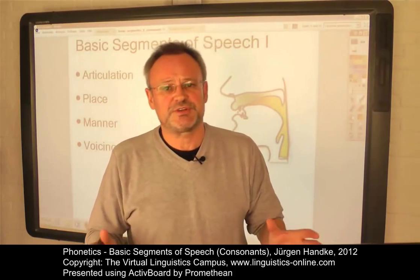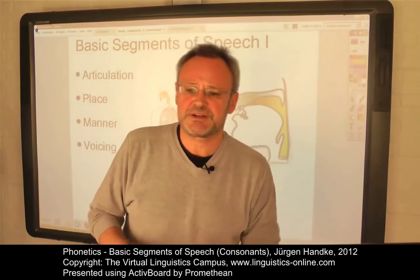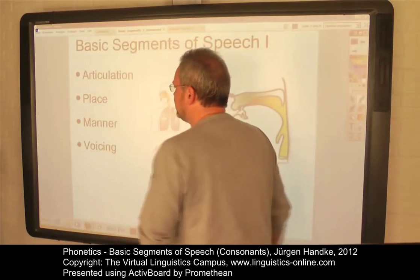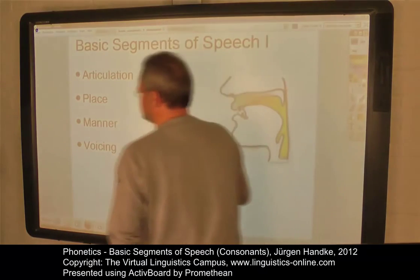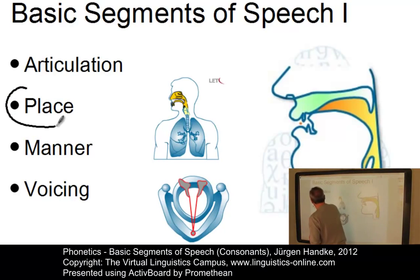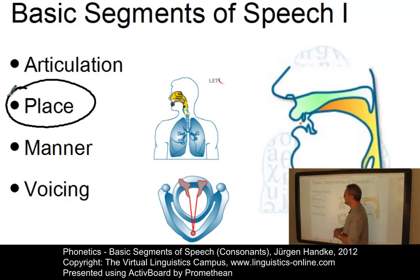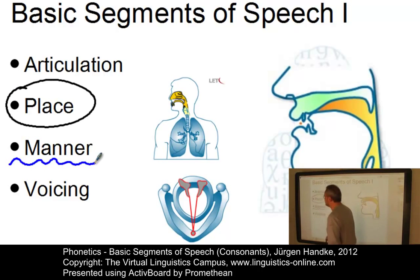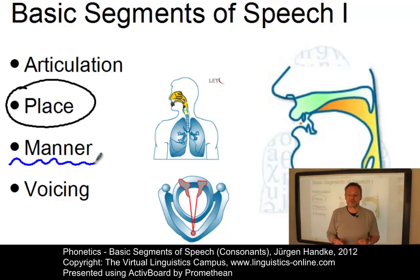Using this criterion, we can set up two distinct articulatory parameters for consonants. For example, the place of articulation — that is, where does the obstruction occur — and the manner of articulation, that is, what type of obstruction is involved.